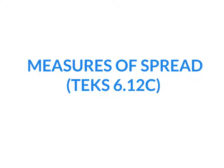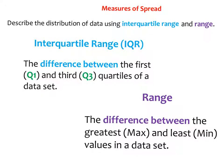In this lesson, we'll be learning about and practicing with measures of spread, meeting the requirements for TEQs 612C. Measures of spread are used to describe the distribution of data using what's called the interquartile range and range. Interquartile range is the difference between the first and third quartiles of a data set, while range is the difference between the greatest, or maximum value, and least, or minimum values in a data set.